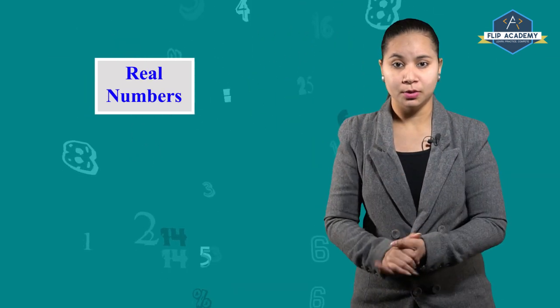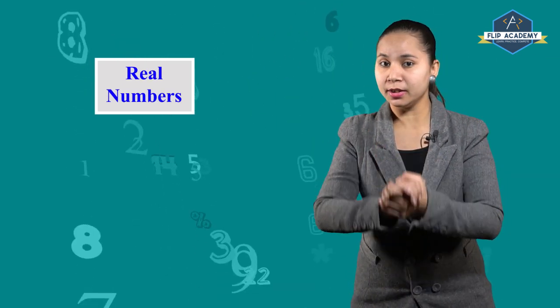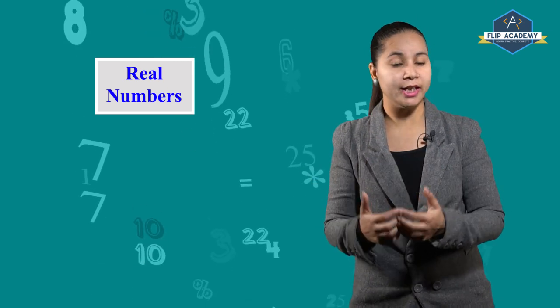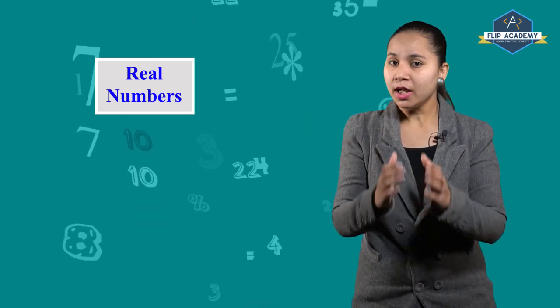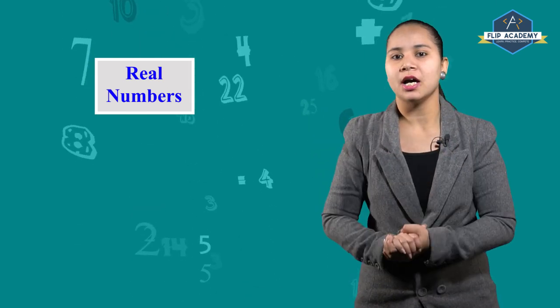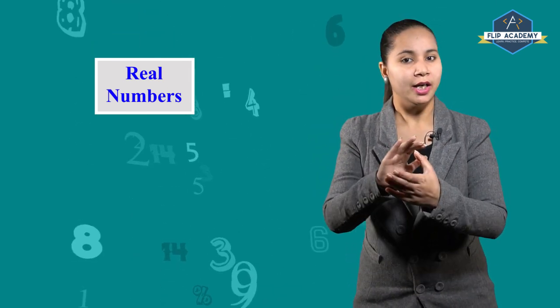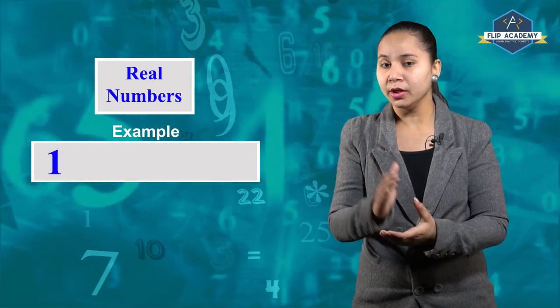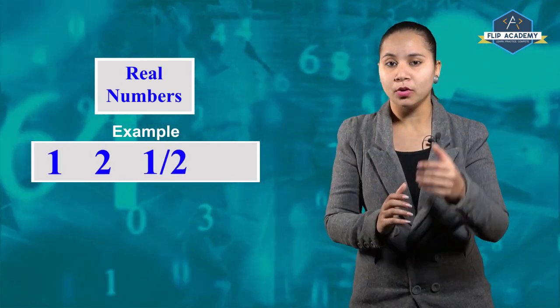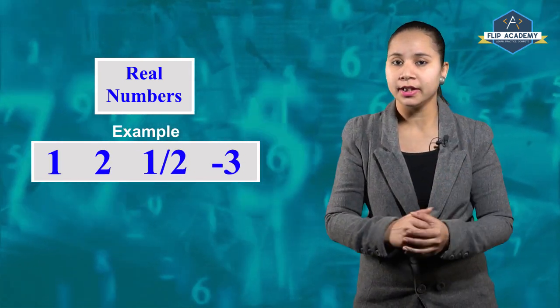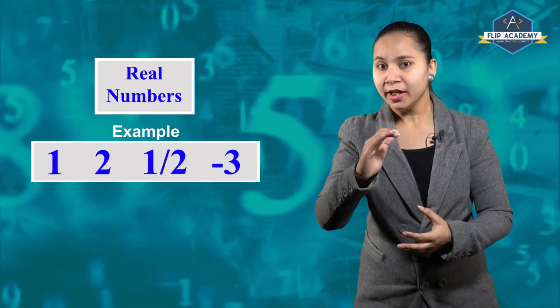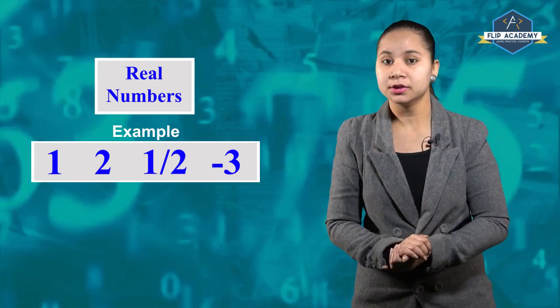Come back to real numbers. What are real numbers? Those numbers that we can see and that we can count — such numbers are known as real numbers. For example, 1, 2, 1/2, minus 3. All these numbers are real numbers.